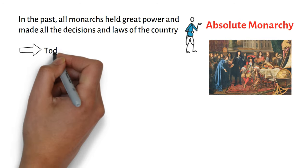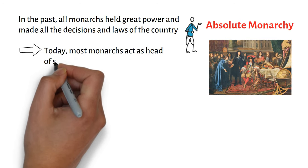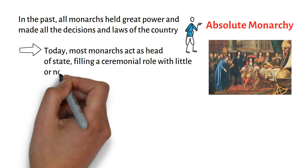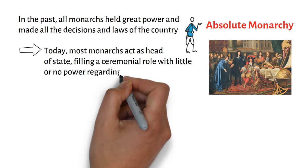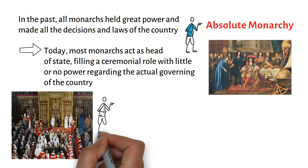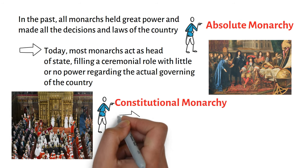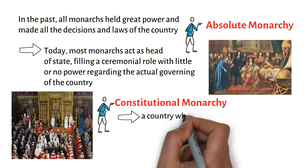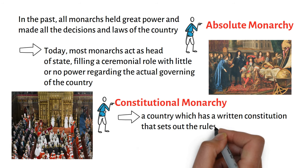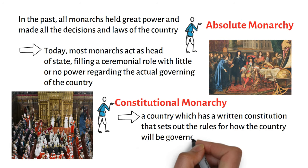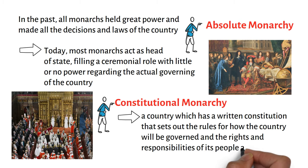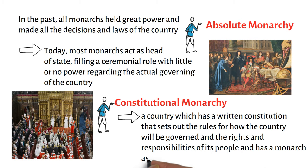Today, most monarchs act as head of state, filling a ceremonial role with little or no power regarding the actual governing of the country. A constitutional monarchy is a country which has a written constitution that sets out the rules for how the country will be governed, the rights and responsibilities of its people, and has a monarch as head of state.